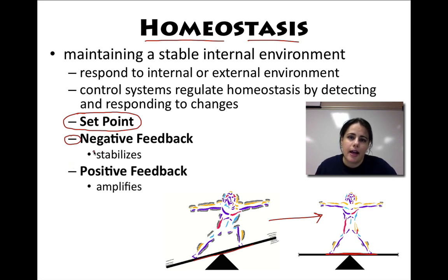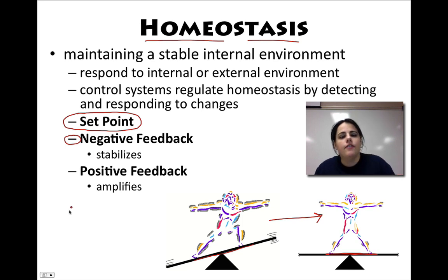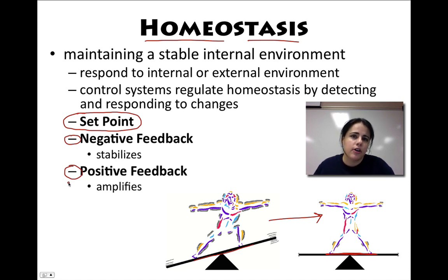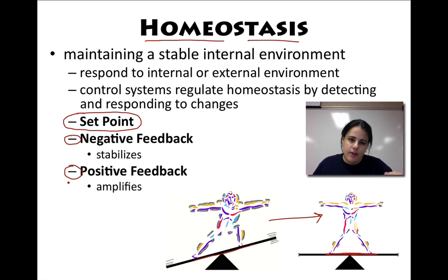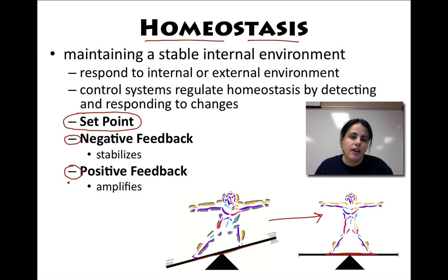Negative feedback is the main one that happens in living organisms. It stabilizes your condition — if you go too high or too low, it will bring it back to the set point. Positive feedback is the opposite. It's not super common in our bodies, but there are a few examples. Instead of stabilizing, this condition will amplify. So if your temperature goes up, negative feedback brings it back down, but positive feedback would keep making it go up until something else responds to it.